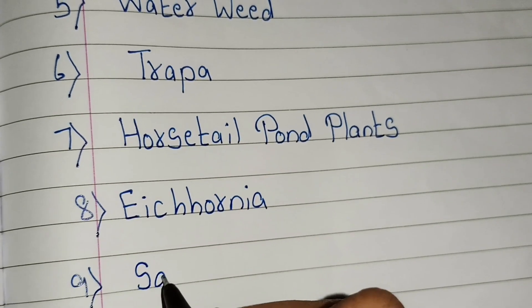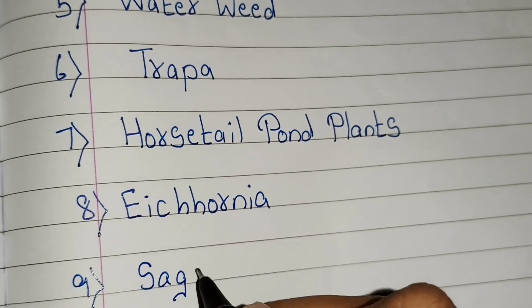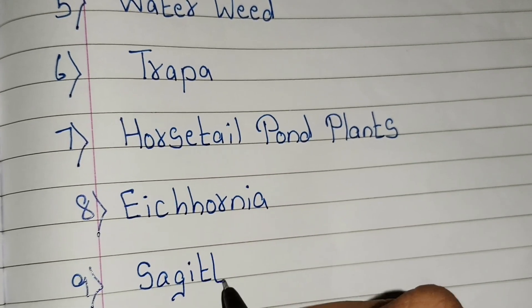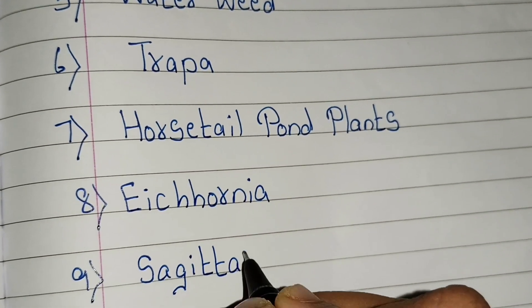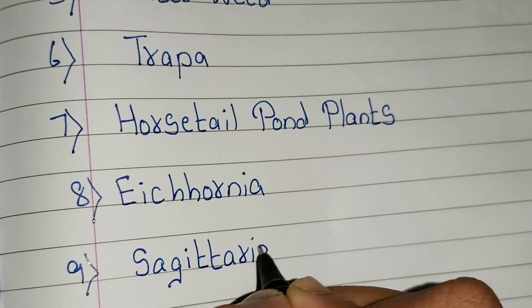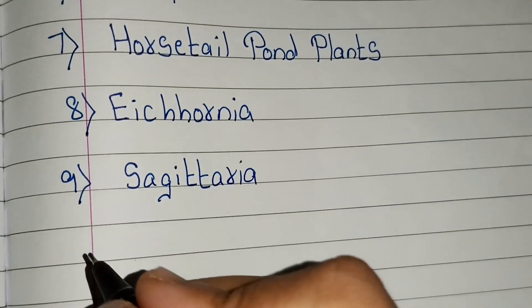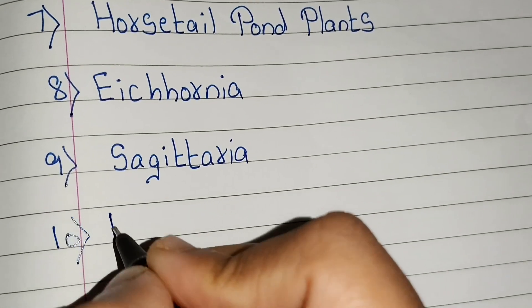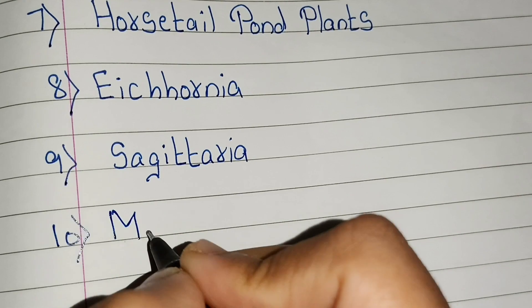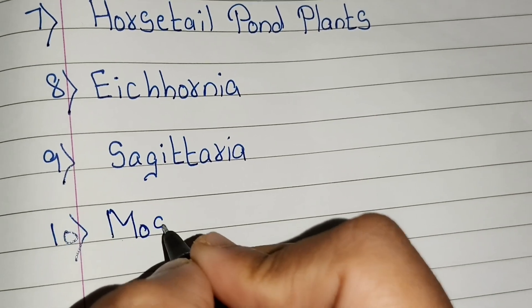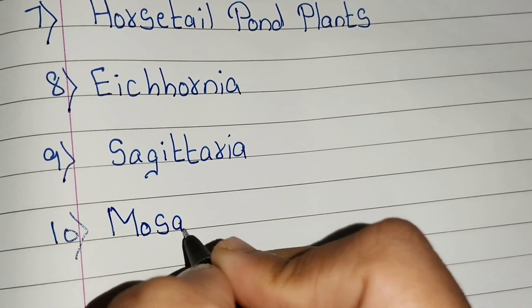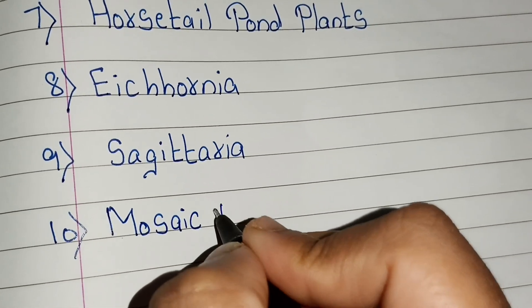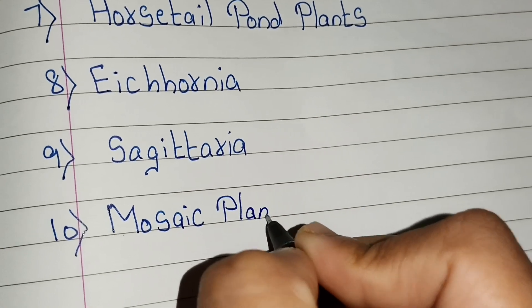Ninth, sagittaria — S-A-G-I-T-T-A-R-I-A. Tenth, mosaic plant.